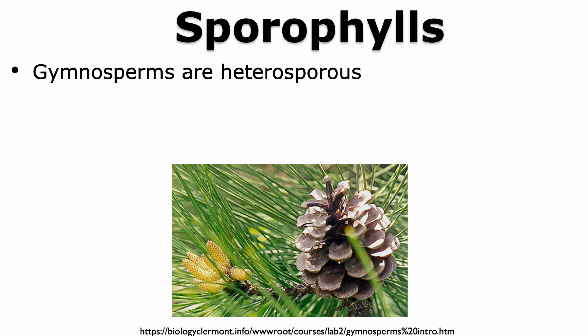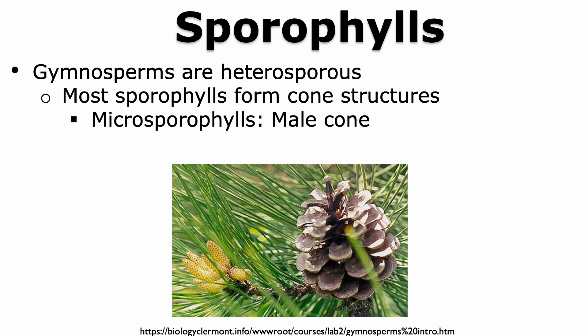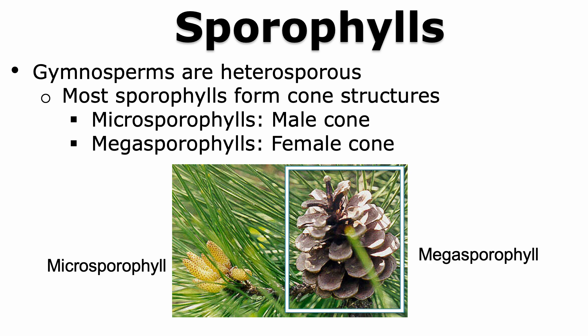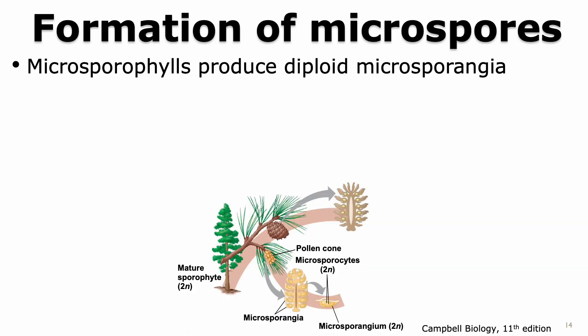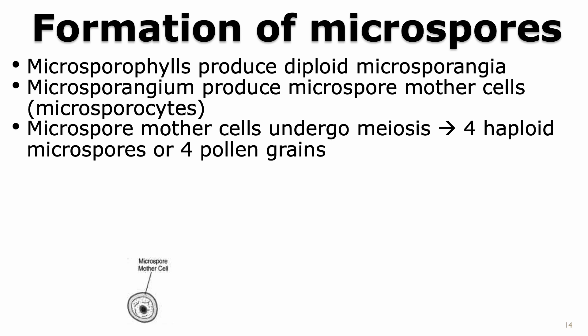All gymnosperms are heterosporous, and hence they have two types of sporophylls. Most sporophylls form cone-like structures. The microsporophylls are also called the male or pollen cones. The megasporophyll is the female cone, also called the ovulate cone. The formation of microspores from microsporophylls is a multi-step process. The first step involves the production of microsporangia, which are diploid structures. In each microsporangium, there are microspore mother cells, also called microsporocytes. Each microspore mother cell, which is diploid, will undergo meiosis to give rise to four haploid microspores. These haploid microspores will develop to form pollen grains, so four haploid microspores give rise to four pollen grains.